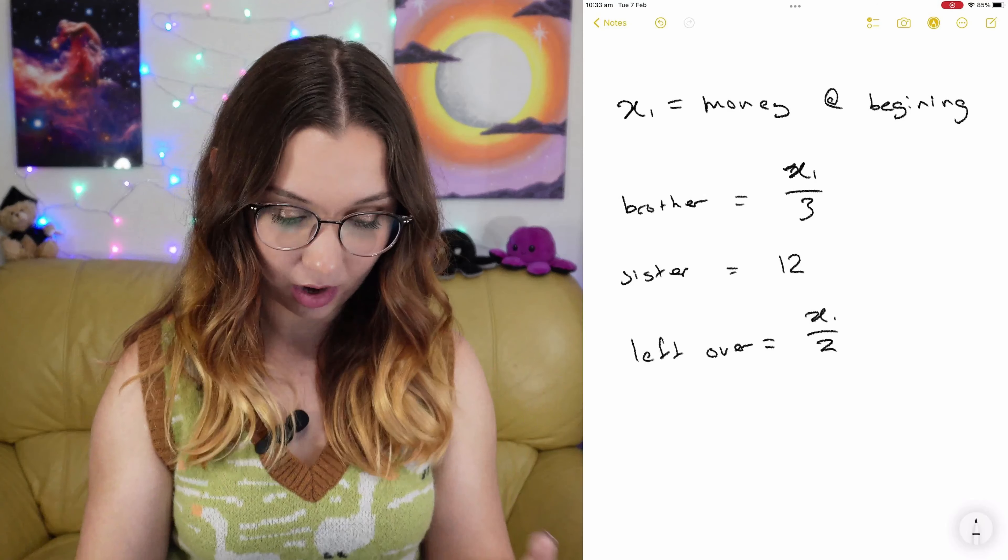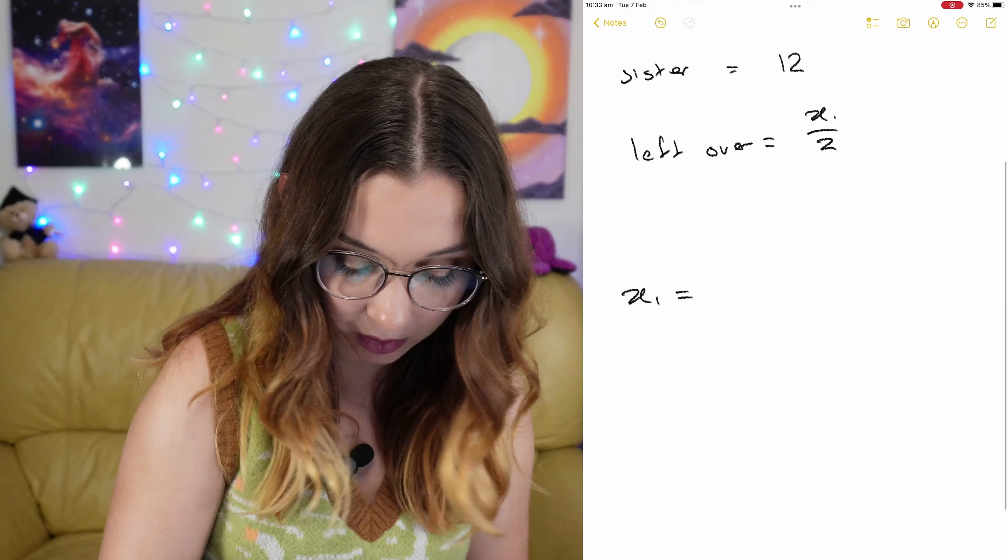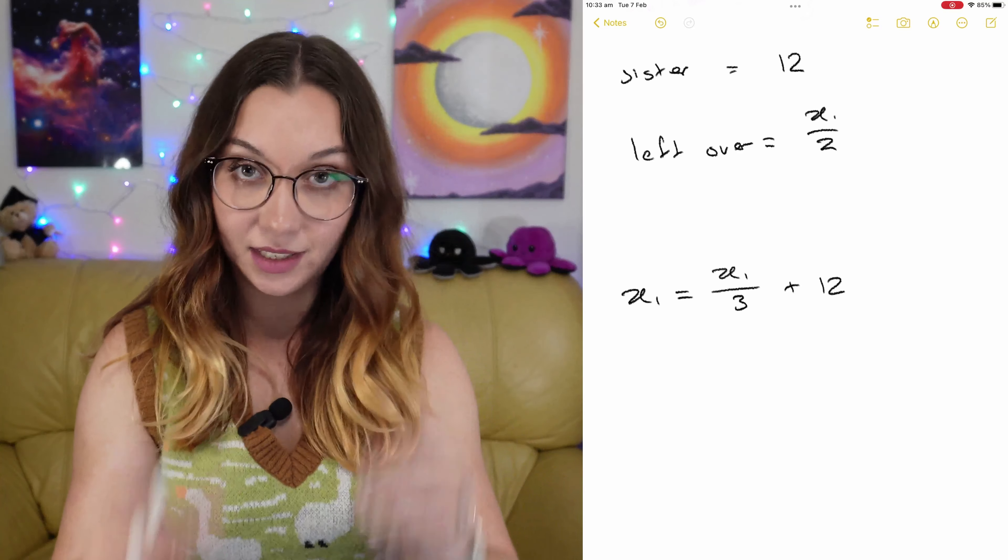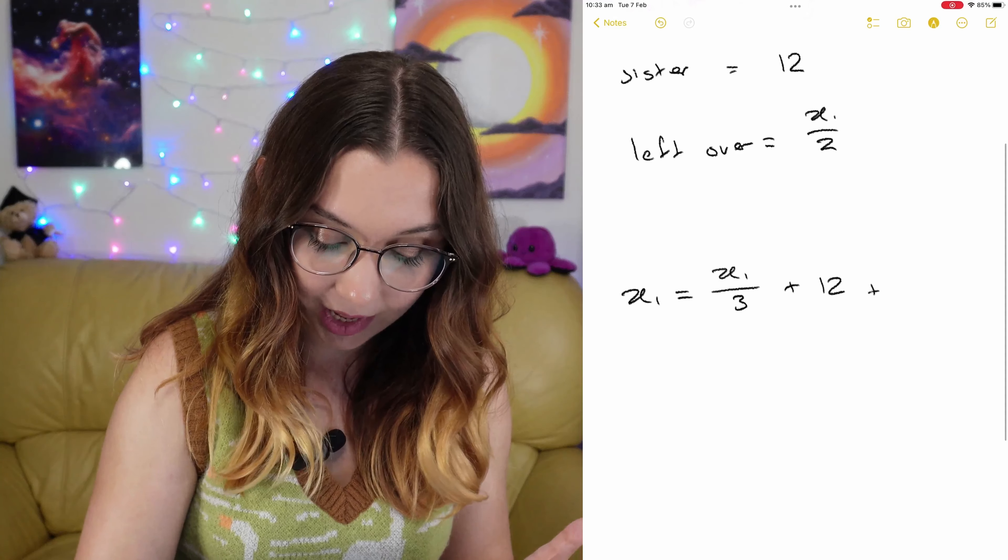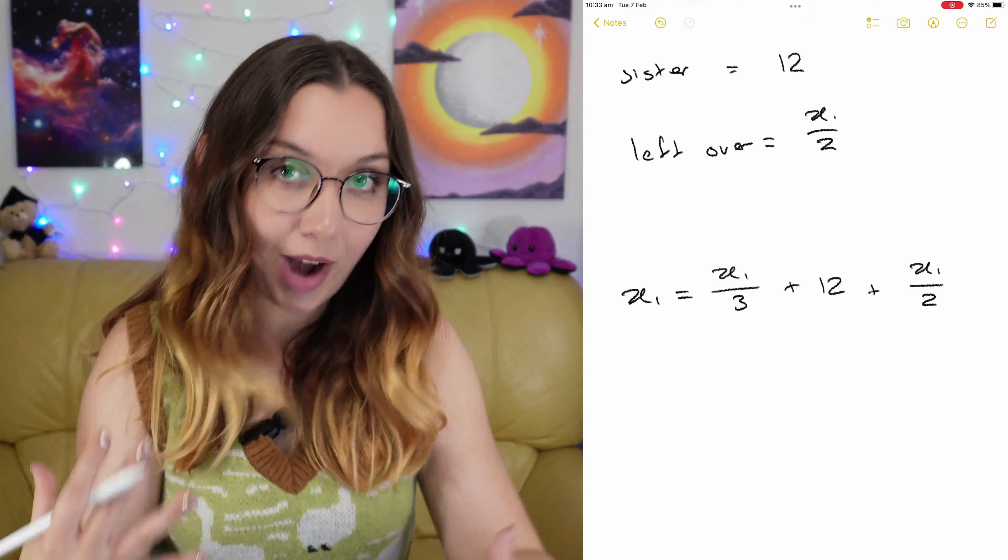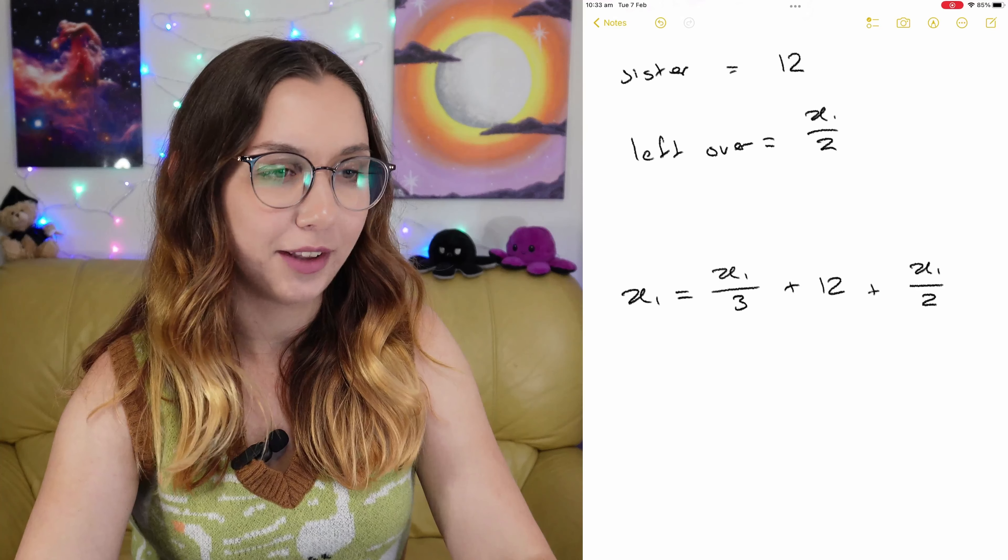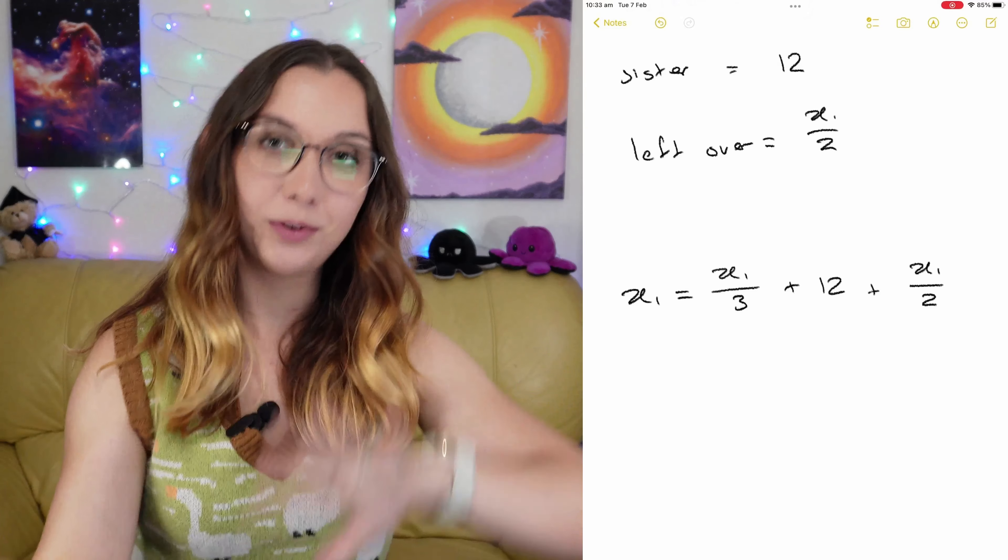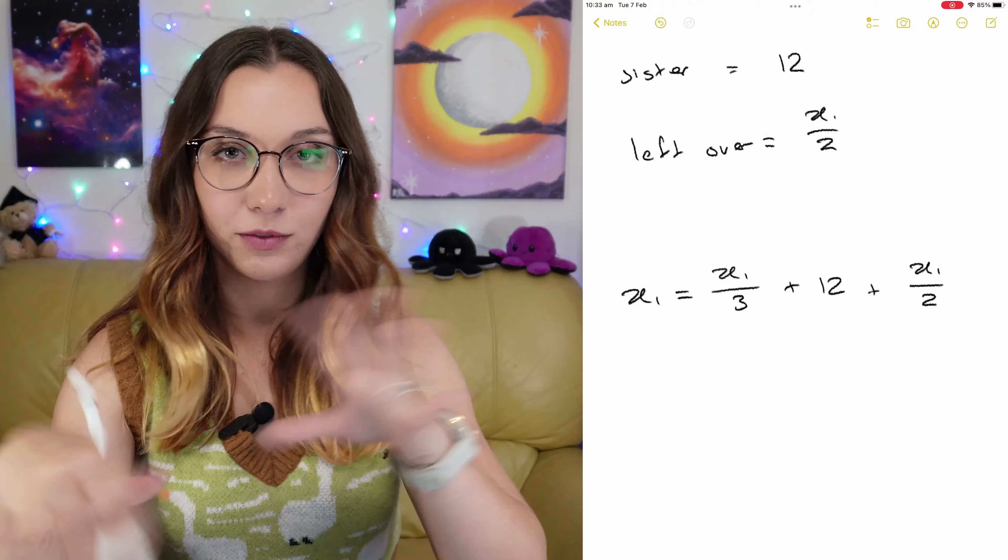All of his money is split between one third going to his brother, 12 euro for his sister, and what was left over was half. So the total money x1 is equal to x1 over 3 plus 12 plus x1 divided by 2. What I'm going to do is divide both sides by x1.